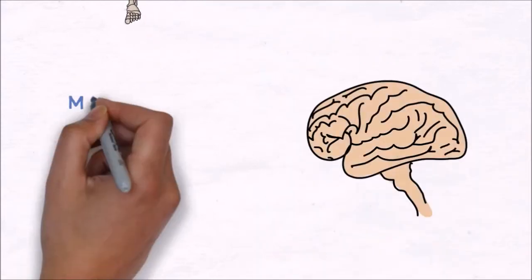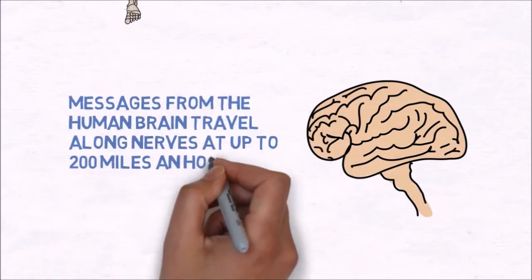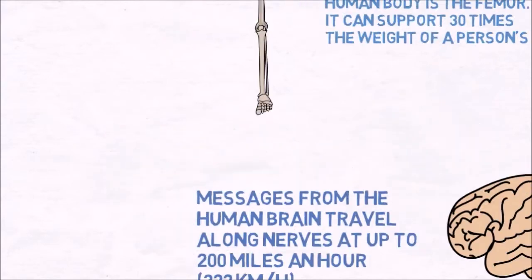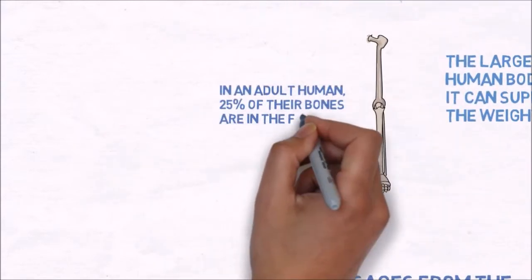Messages from the human brain travel along nerves at up to 200 miles an hour. In an adult human, 25% of their bones are in the feet.